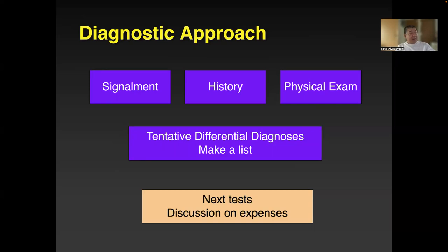Make a list — that is very important. Not many people do that, and that is a problem. If the owner says the dog is not doing well, don't just jump to blood chemistry. You have to have some disease condition in mind first. I use the DAMNIT mnemonic or vitamin D — whichever works. Think about the category of diseases first, and that's why you want to do specific tests.